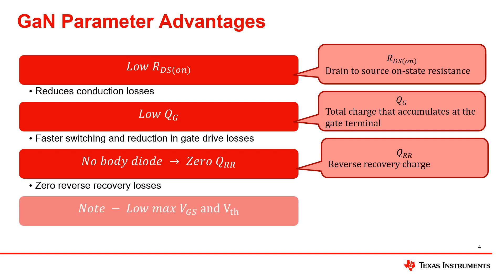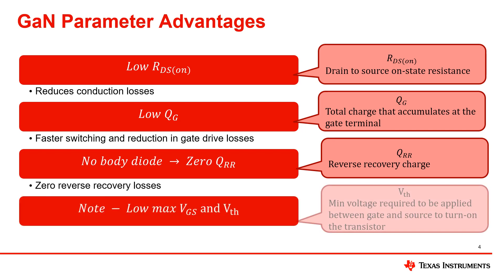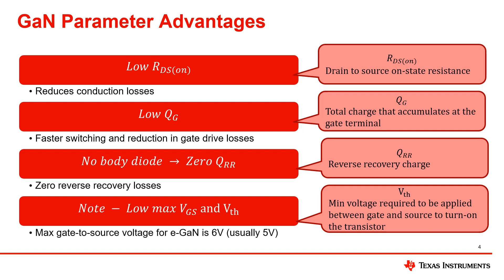When it comes to the maximum allowable gate-to-source voltage and the threshold voltage, GAN FETs have lower values. EGAN FETs, for example, have a maximum gate-to-source voltage of about 6 volts. Usually we recommend 5 volts be applied.